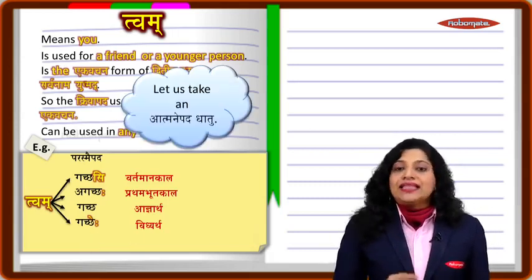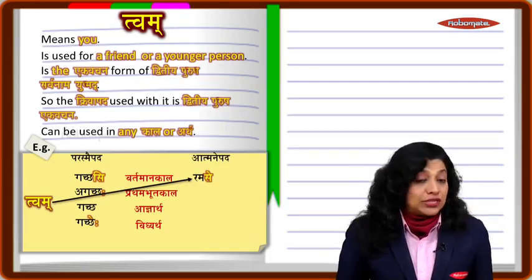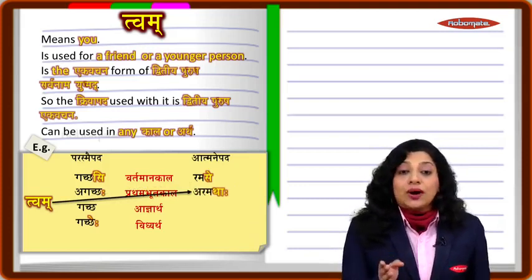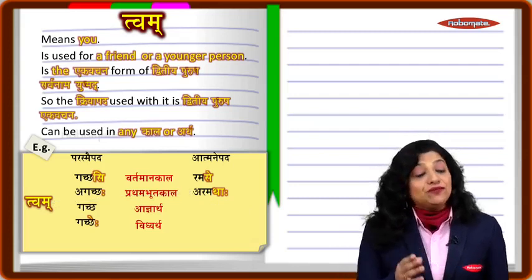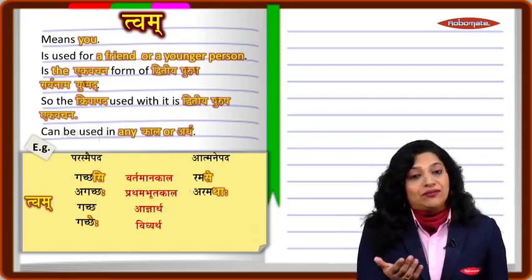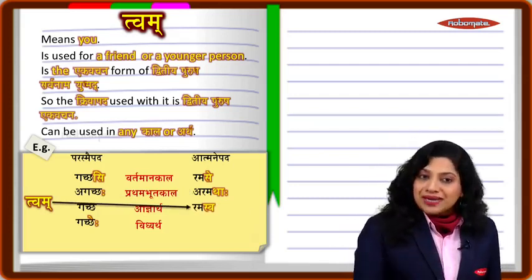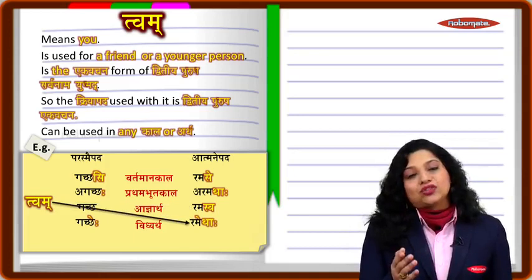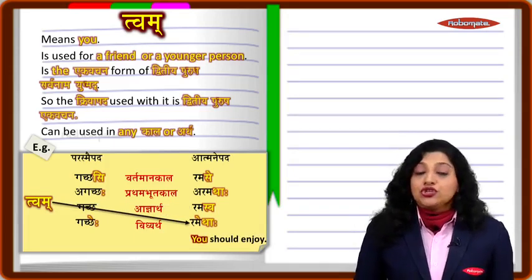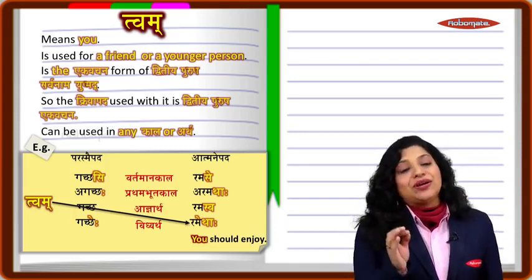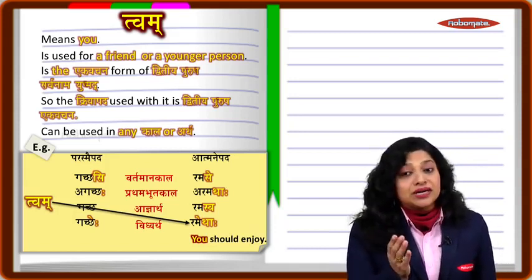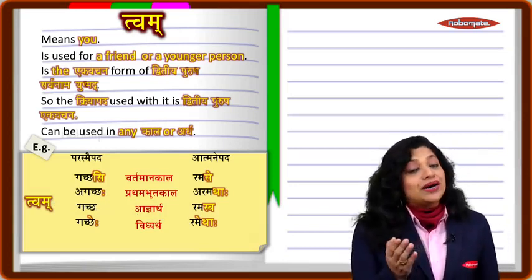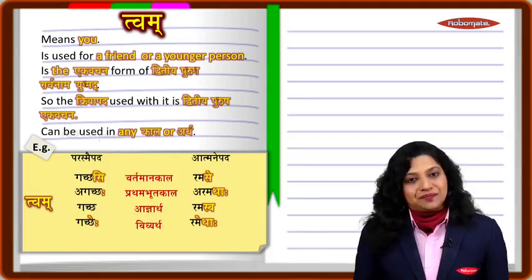For an atmanepada dhatu like 'ram' (meaning to enjoy), you say 'twam ramase' — you are enjoying. In prathama bhutakala you say 'twam aramathah' — you enjoyed. In adnirtha (order, request, or permission) you say 'twam ramaswa' — you may enjoy. And in vidhyartha you say 'twam ramethah' — you should enjoy. So with twam, different pratyayas are used depending on the tense and mood.